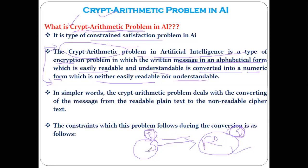If the message is encoded by the sender, how to decode it should be known by the receiver only. In cryptarithmetic, we convert the message from readable plain text to non-readable cipher text. The message encoded by the sender becomes cipher text, and when the receiver decodes it, it becomes plain text. Plain text means no encoding is done — readable form. Cipher text means unreadable form.